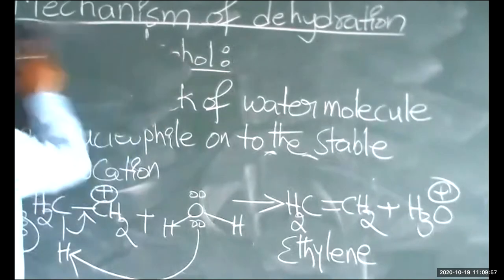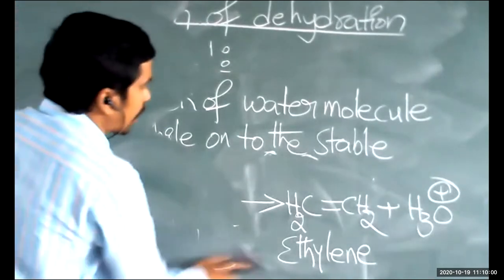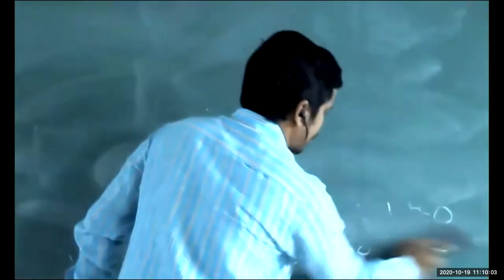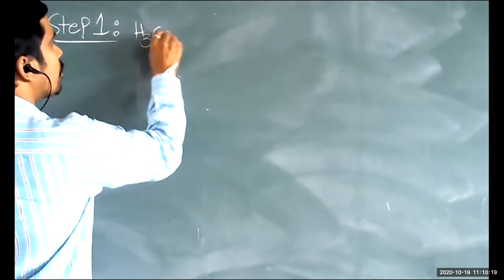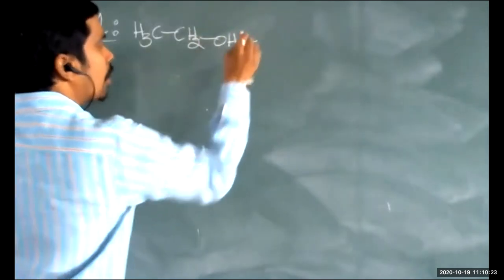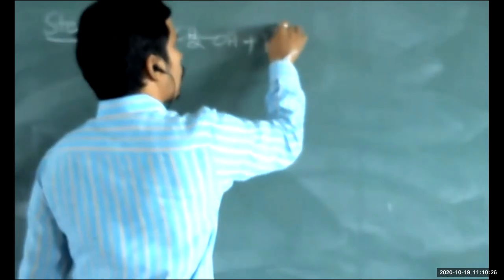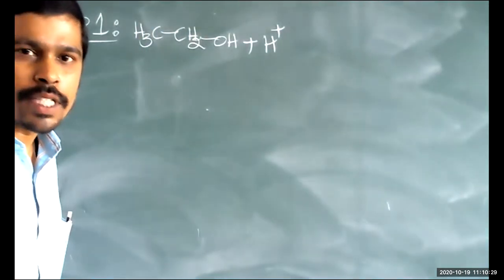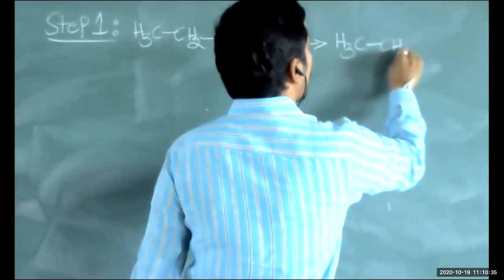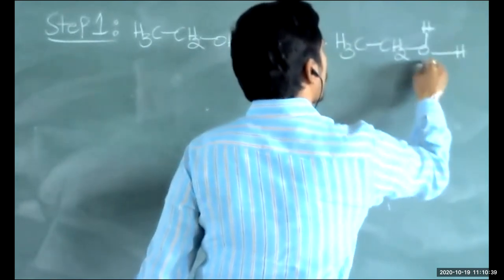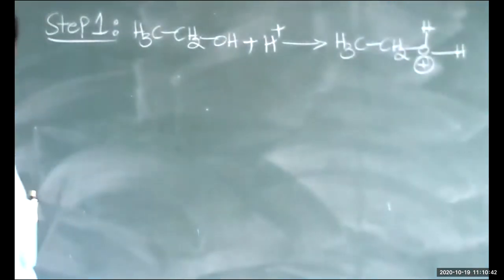Simply writing the three steps again. Step one: ethyl alcohol (CH₃–CH₂–OH) reacts with H⁺ from concentrated H₂SO₄ to give protonated ethyl alcohol. Step two: the protonated ethyl alcohol undergoes bond cleavage between carbon and oxygen — the bonded electrons migrate to oxygen, removal of water takes place, and the stable carbocation CH₃–CH₂⁺ is formed.